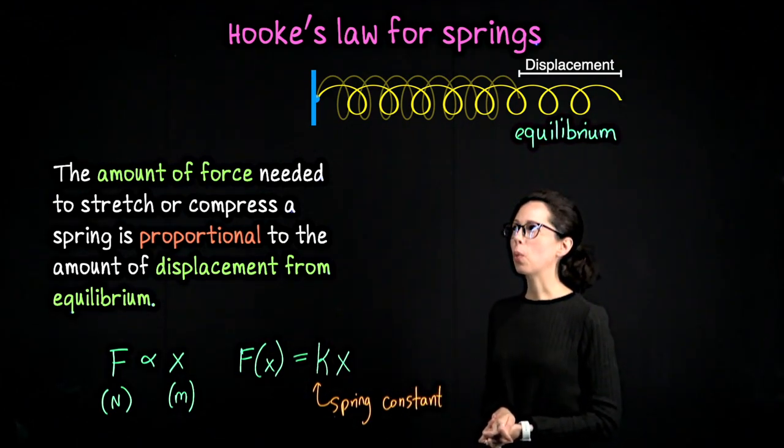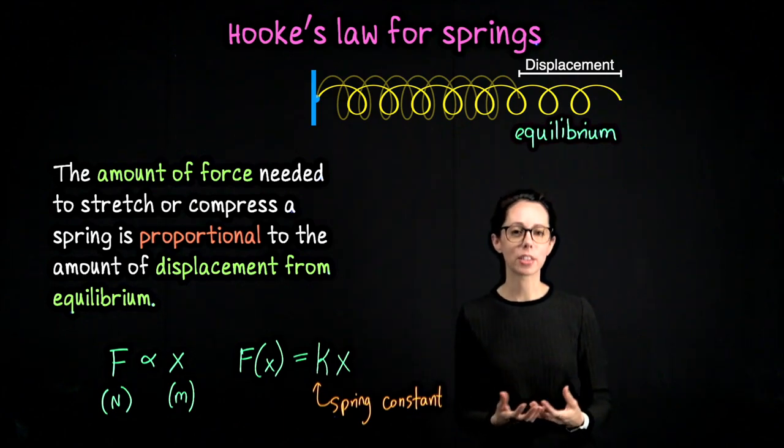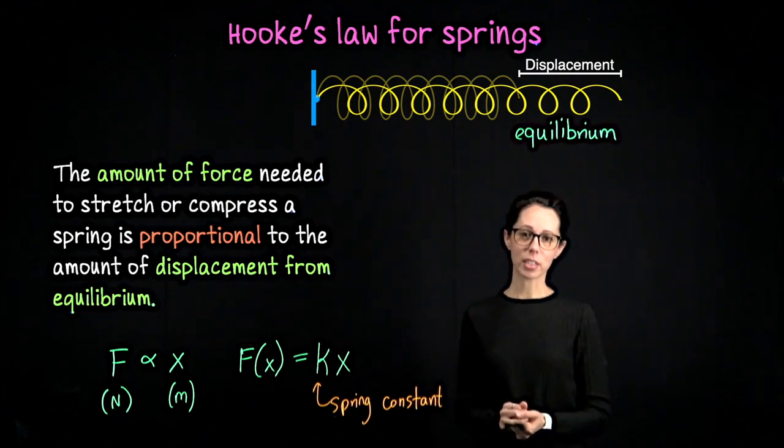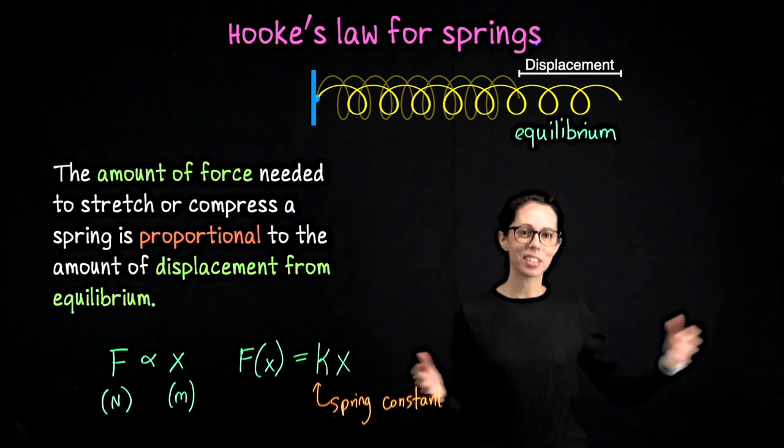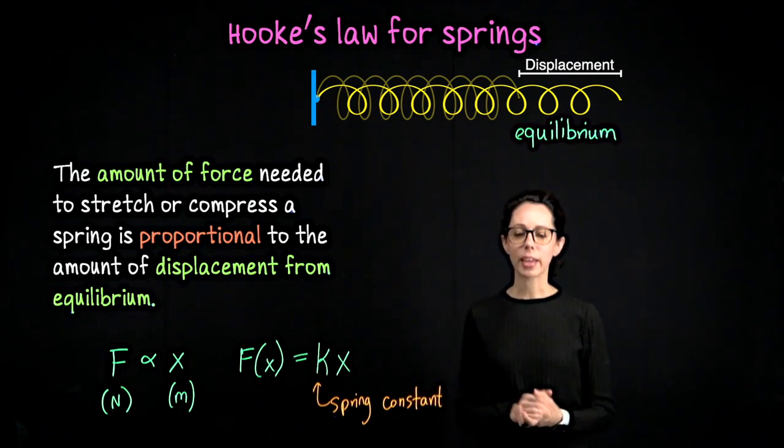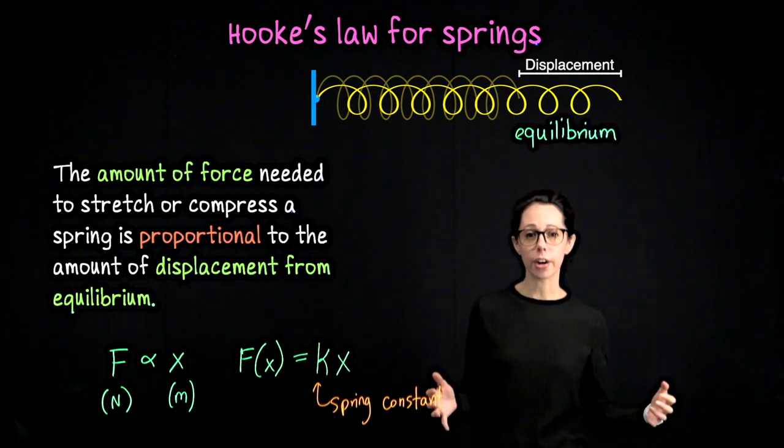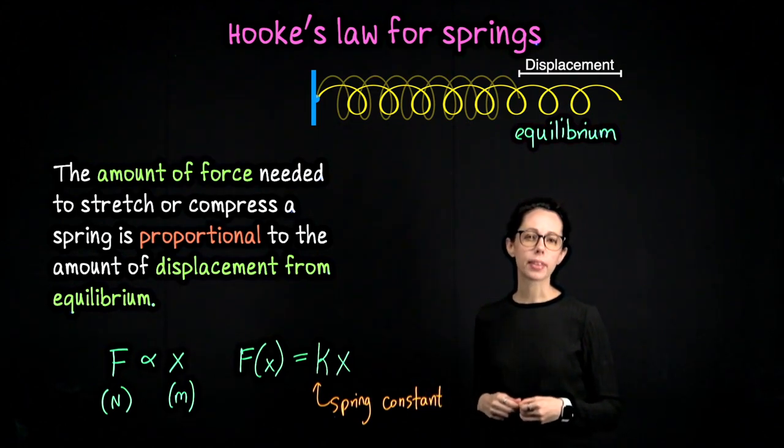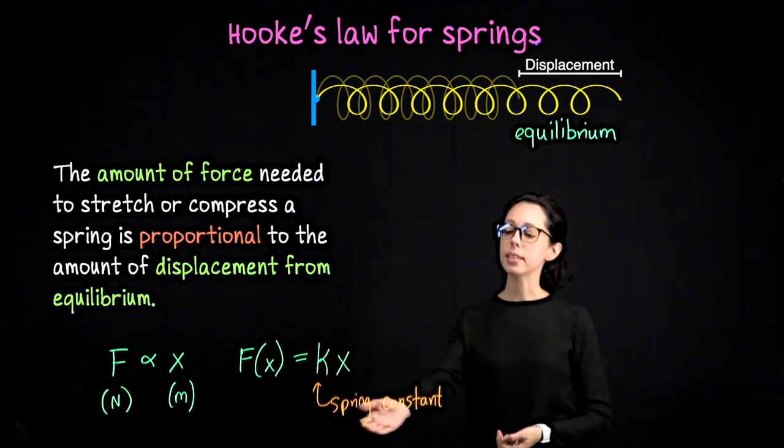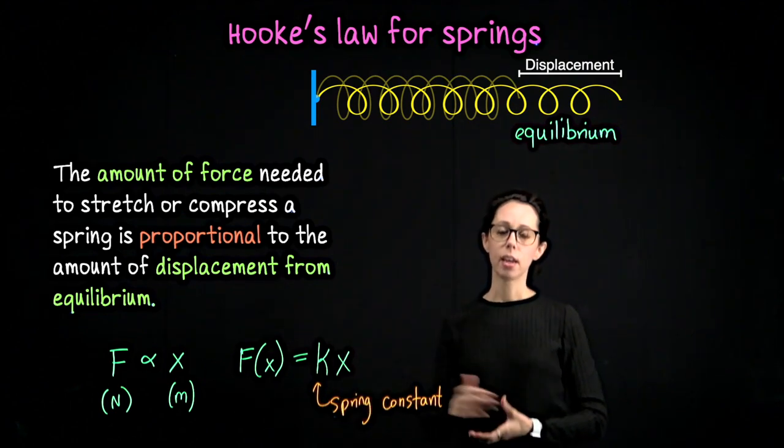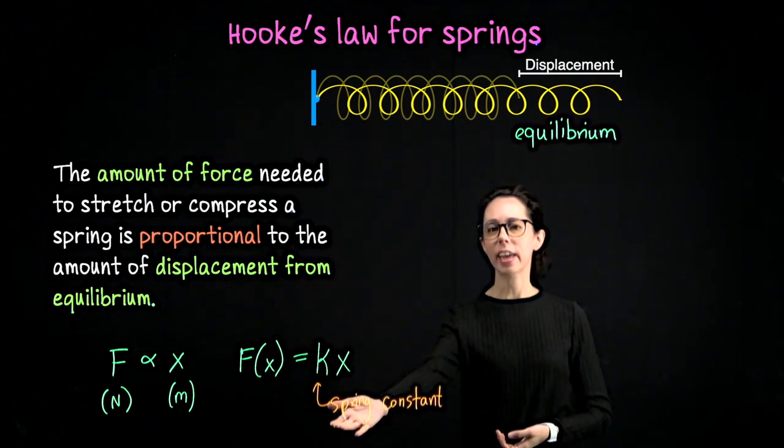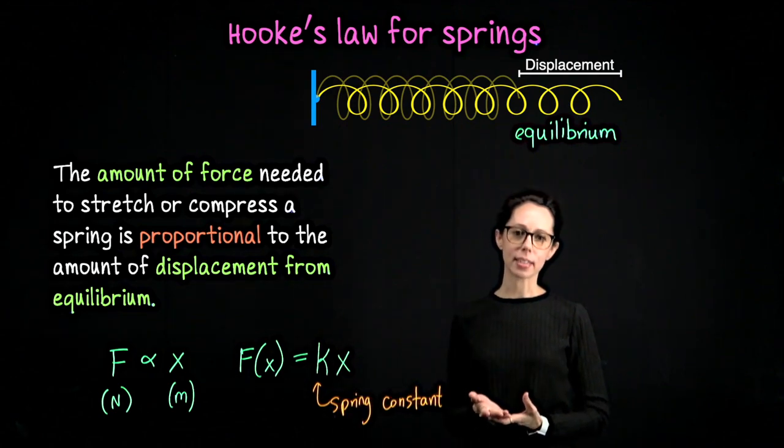You might also be wondering about how different springs are easier than others. For example, if you have a plastic slinky, it's pretty easy to stretch it out. But if you have a thick metal coil, it's a lot harder. That is a property of a spring and it's included in the spring constant. A thick metal coil is going to have a higher k value than a plastic slinky.